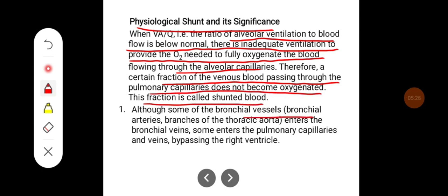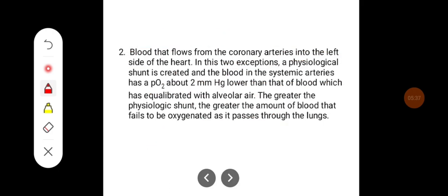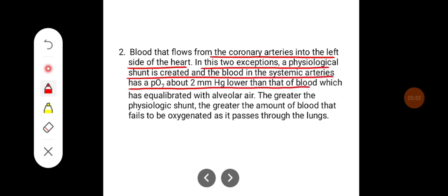Some bronchial vessels — bronchial arteries, branches of the thoracic aorta — enter the bronchial veins, but some enter the pulmonary capillaries and veins, bypassing the right ventricle. Blood that flows from coronary arteries into the left side of the heart creates a physiological shunt. As a result, blood in the systemic arteries has a PO2 about 2 mmHg lower than that of blood equilibrated with alveolar air. The greater the physiological shunt, the greater the amount of blood that fails to be oxygenated.